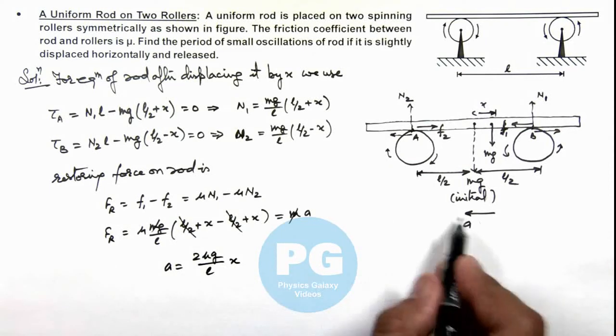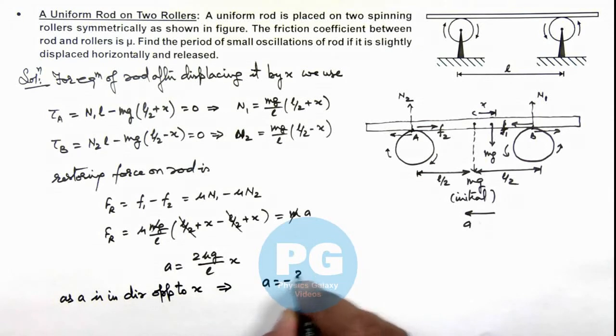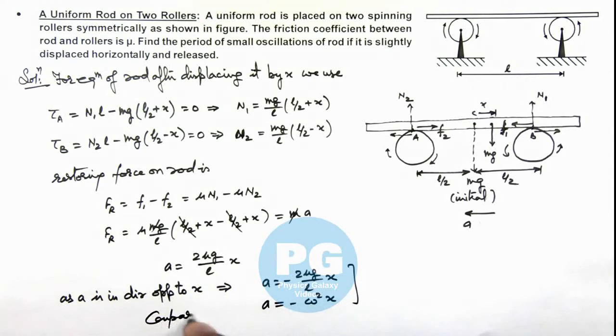And as a is opposite to x, this implies we can write a = -(2μg/L) multiplied by x, or we can compare it with a = -ω²x. Comparing with a = -ω²x, because here acceleration is directly proportional to x, this implies it is executing SHM.